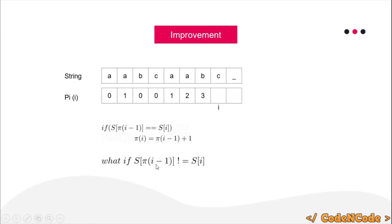What if the pi[i-1]-th character is not equal to the i-th character? This is where we left off, and this is where we start again. To calculate pi[i], the first thing we do is compare the i-th character with the pi[i-1]-th character.